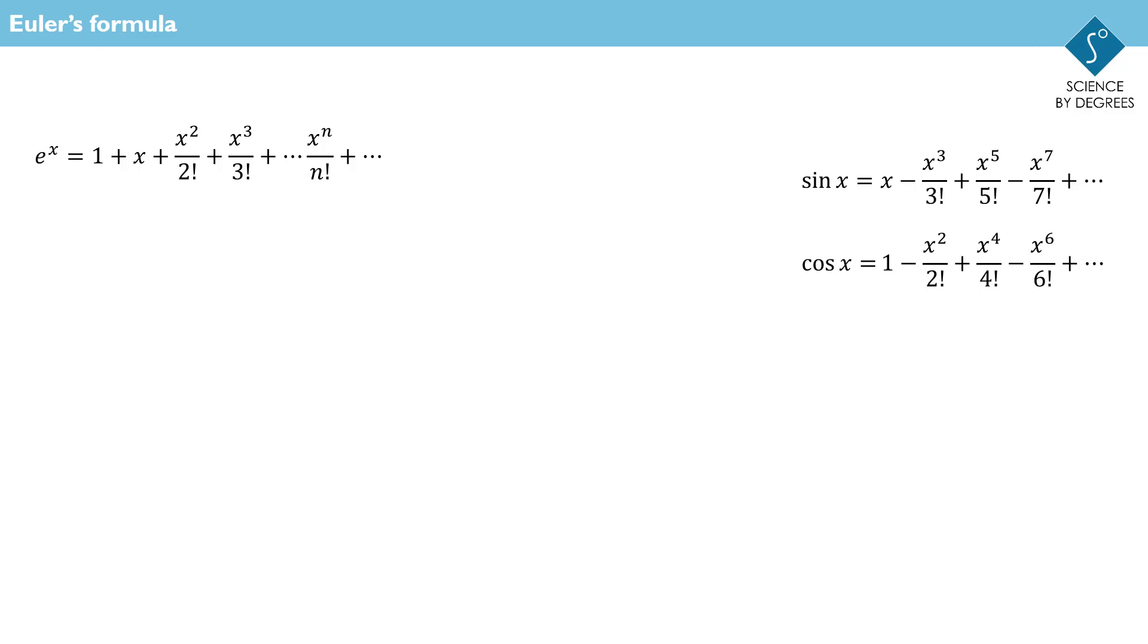Let's take the expansion for e to the x and substitute in i theta for x. The i is the imaginary i and the theta will later represent the angular coordinate of a complex number on the complex plane.